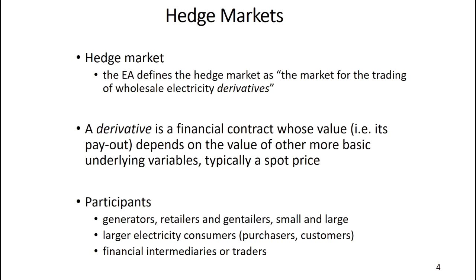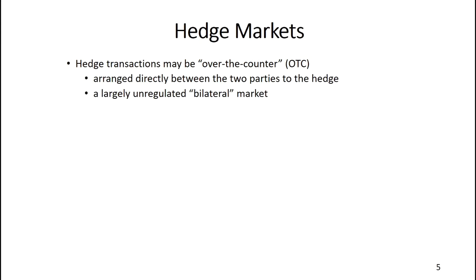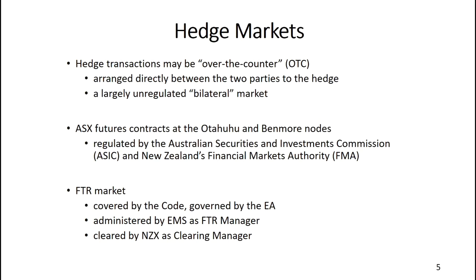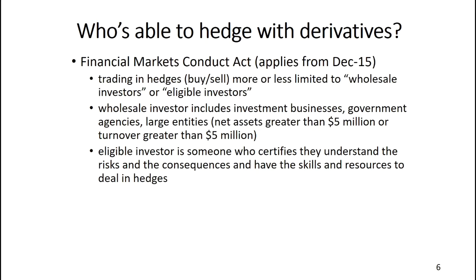There are three different types of hedge markets. The first is the over-the-counter market, OTC. These hedges are arranged directly between two parties; it's largely unregulated and it's a bilateral market. The second, and a very important market these days, is run by the Australian Securities Exchange — these are futures contracts available at the Otahuhu and Benmore nodes, highly regulated by ASIC and to a lesser extent New Zealand's Financial Markets Authority, the FMA. Finally, the FTR market — Financial Transmission Rights — is covered by the Electricity Authority Code, administered by EMS (a division of Transpower) as the FTR manager, and cleared by NZX as the clearing manager for the spot market.